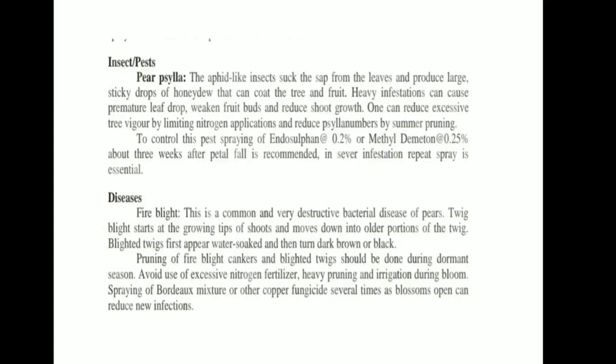Diseases — Fire Blight: This is a common and very destructive bacterial disease of pears. Twig blight starts at the growing tips of shoots and moves down into older portions of the twig. Blighted twigs first appear water-soaked and then turn dark brown or black. Pruning of fire blight cankers and blighted twigs should be done during the dormant season. Avoid use of excessive nitrogen fertilizer, heavy pruning, and irrigation during bloom. Spraying of Bordeaux mixture or other copper fungicides several times as blossoms open can reduce new infections.